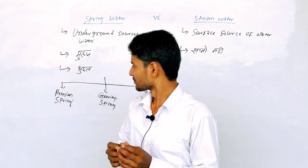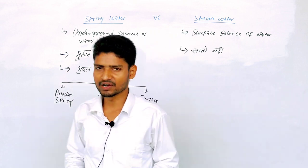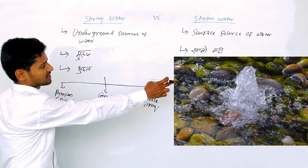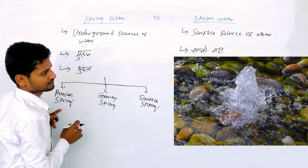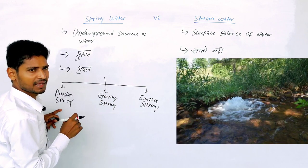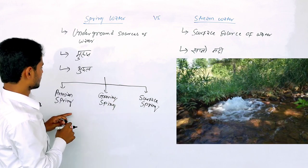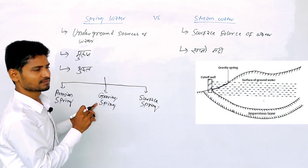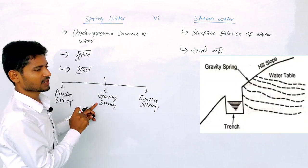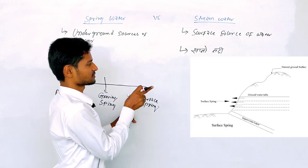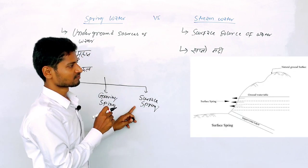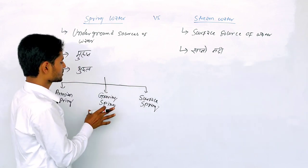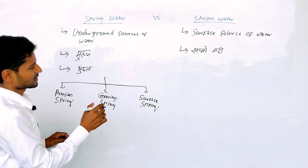The surface spring. This is the figure. This is the artesian spring. Then the gravity spring. The gravity spring — you see on the surface spring. It is the layer of the surface spring. The spring is here, and this is the figure.